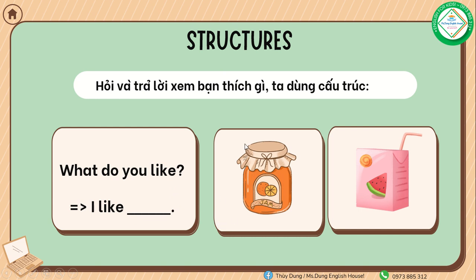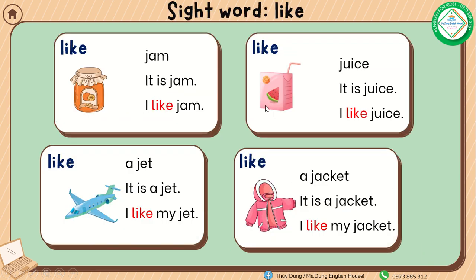What do you like? I like jam. What do you like? I like juice. Today we have: jam — it is jam, I like jam. Juice — it is juice, I like juice. A jet — it is a jet, I like my jet.